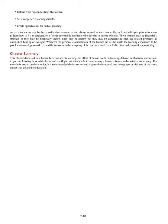An aviation learner may be the retired business executive who always wanted to learn how to fly, an army helicopter pilot who wants to learn how to fly an airplane, or a former automobile mechanic who decides to pursue avionics. These learners may be financially stressed or secure, and may be experiencing age-related problems such as diminished hearing or eyesight. Whatever the personal circumstances, the learner wants the learning experience to be problem-oriented, personalized, and the instructor to be accepting of the learner's need for self-direction and personal responsibility. This chapter discussed how human behavior affects learning, the effect of human needs on learning, defense mechanisms learners use to prevent learning, how adults learn, and the flight instructor's role in determining a learner's future in the aviation community.